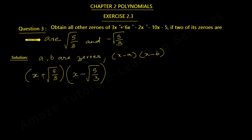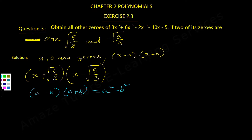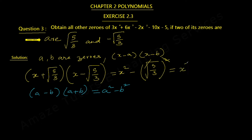These are the two binomial factors. Since the highest degree is 4, let's multiply these two to get a quadratic. This is in the form of (a + b)(a - b) identity. Applying the formula: a² - b², where a is x, so x² minus b which is √(5/3) squared. When we square the square root it gets cancelled, leaving us with 5/3. So the quadratic factor is x² - 5/3.